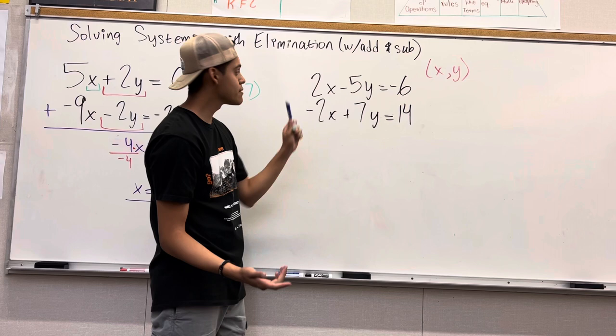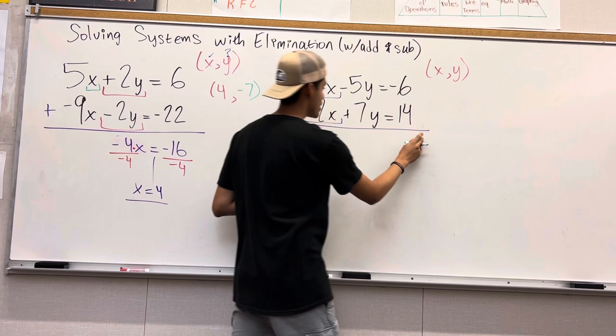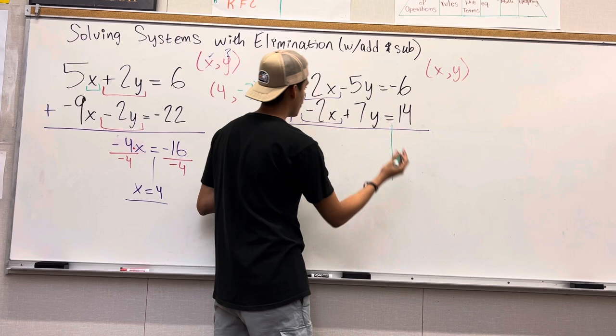So now, in this case, we are going to be eliminating the x's this time. We are going to add. Remember, we are doing addition. When you see the opposites of each other, 2x minus 2x would give you 0x. So we are going to cross it out. Negative 5y plus 7y would give you positive 2y.